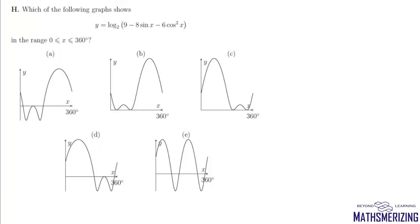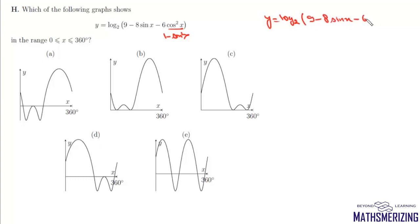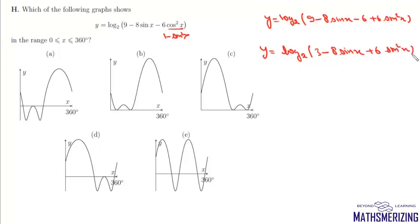In question H, we are given the function y = log(9 - 8sinx - 6cos²x) and we have to find which of the following is the graph of this function. To identify the graph, we change everything to sin by writing cos²x as 1 - sin²x. So y becomes log(9 - 8sinx - 6 + 6sin²x) to base 2, which gives y = log(3 - 8sinx + 6sin²x) to base 2.